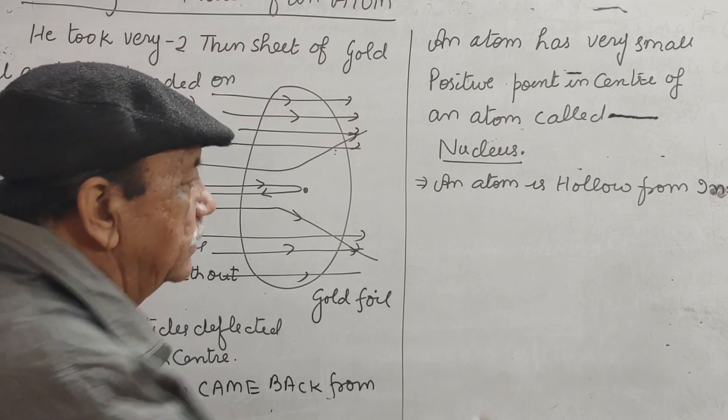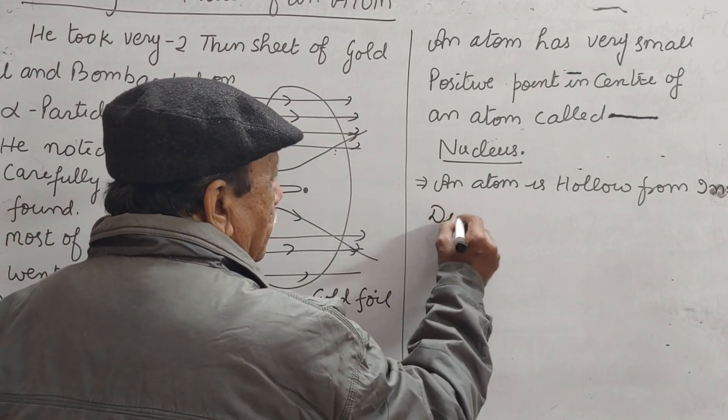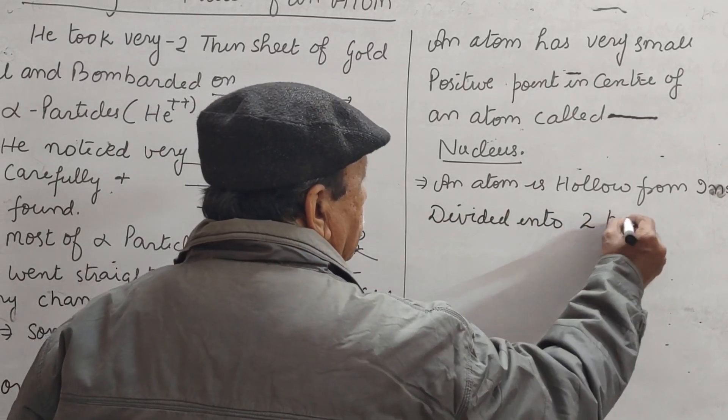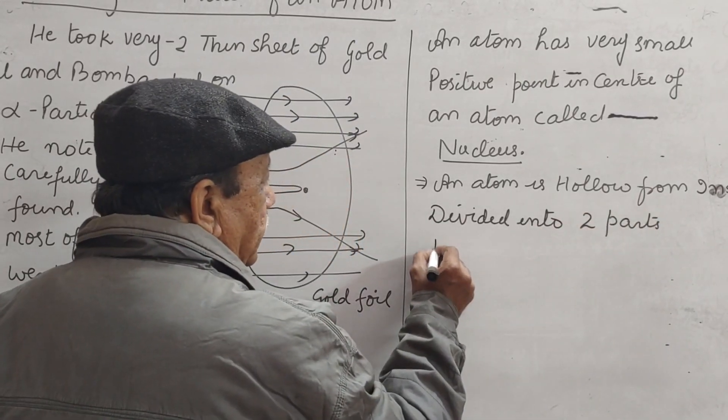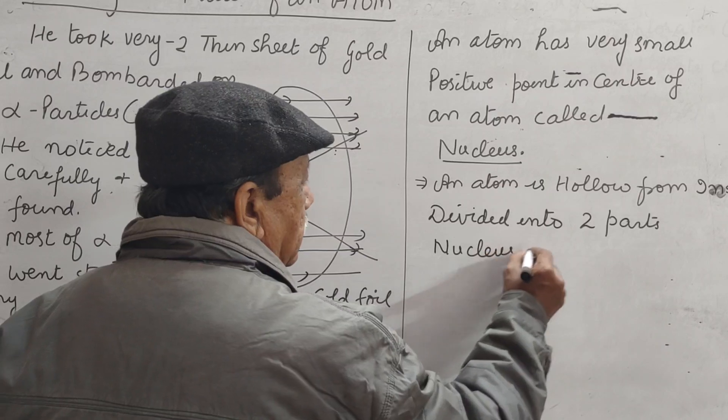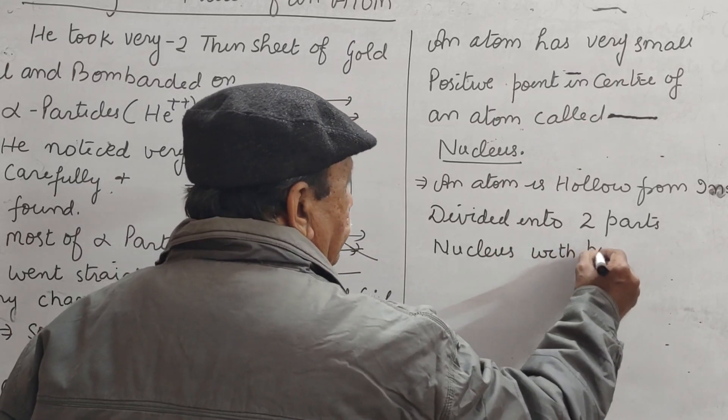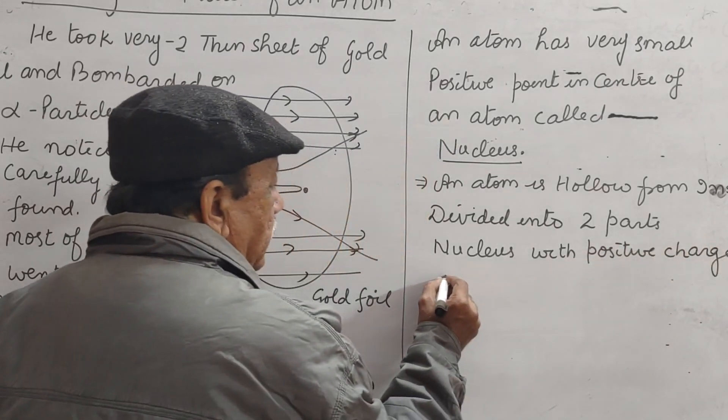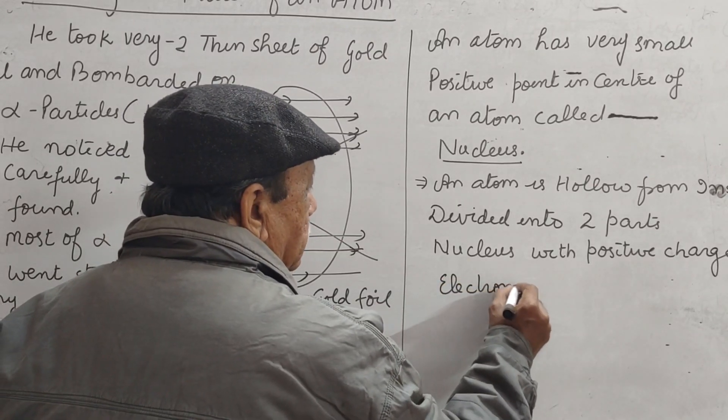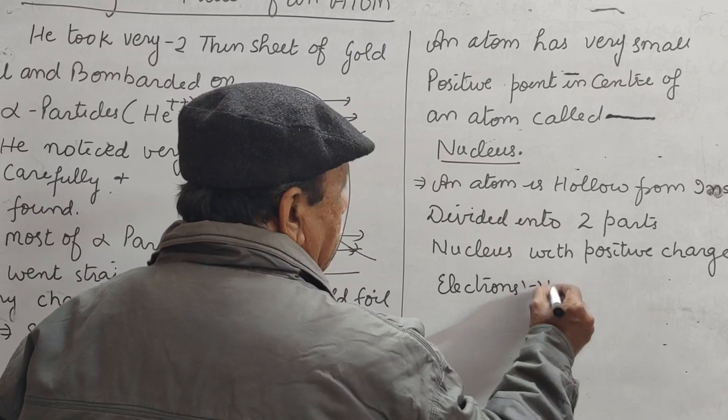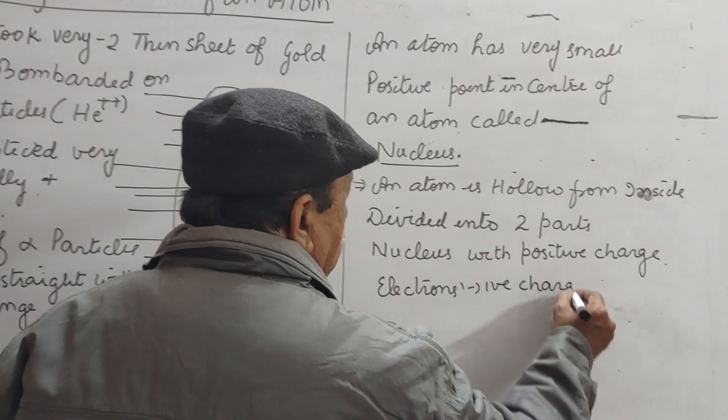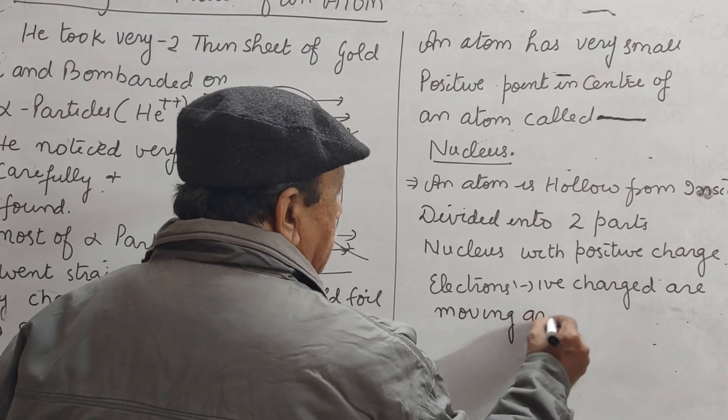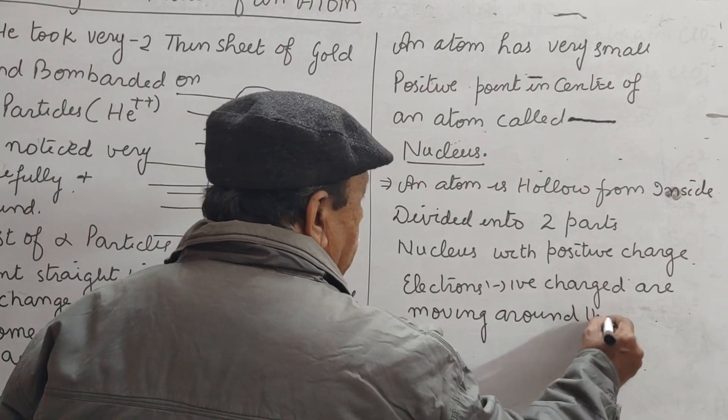Therefore, he divided atom into two parts: Nucleus with positive charge and electrons with negative charge are moving around the nucleus.